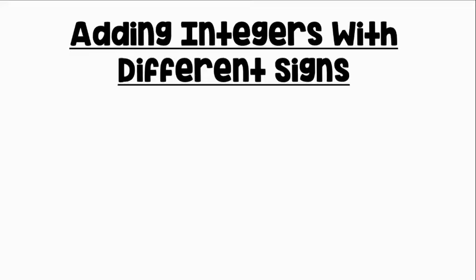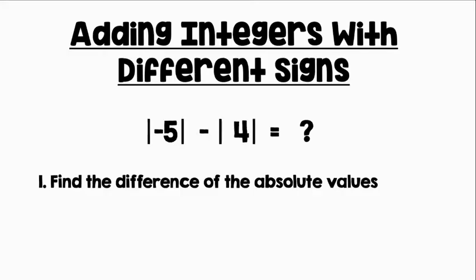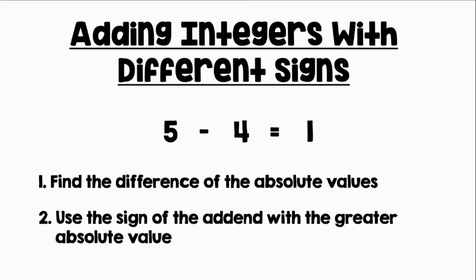Let's take a look at our rule for adding integers with different signs. We'll look at that expression we used in the last example, negative five plus four. First, find the difference of the absolute values. Five minus four equals one. Next, use the sign of the addend with the greater absolute value. The original expression was negative five plus four. Negative five has the greater absolute value. Therefore, our sum will be negative.